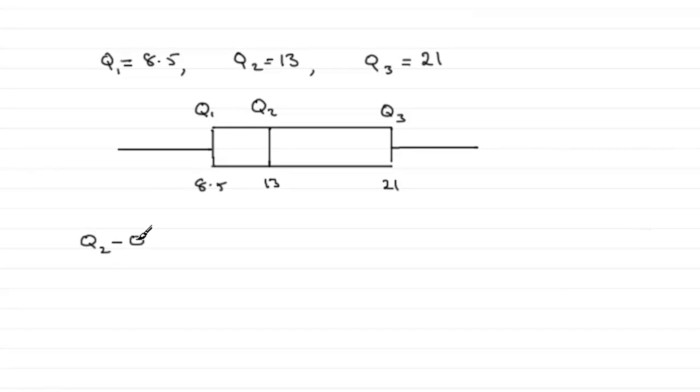Say Q2 minus Q1 equals 13 minus 8.5, and that comes to 4.5. Whereas if we work out the other width, Q3 minus Q2, that's going to be 21 minus 13, and that comes to 8.